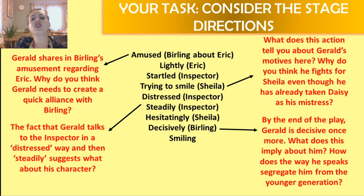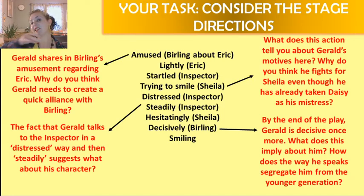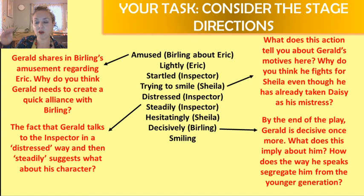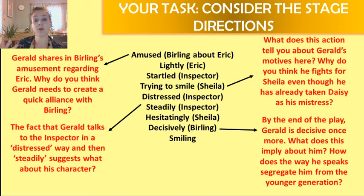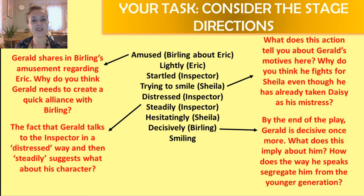By the end of the play, Gerald is decisive once more. What does this imply about his character? How does the way he speaks segregate him from the younger generation — separating himself from Sheila and from Eric? He is siding with Mr. Birling again, being decisive. Do you remember Eric — half shy, half assertive? Not Gerald. Gerald is 100% assertive. I think he becomes himself again at the end of the play, particularly when he is the one who announces that the inspector was a fraud and not a real policeman at all. I think he's very pleased to have been the fairytale prince once more, rescuing everyone.